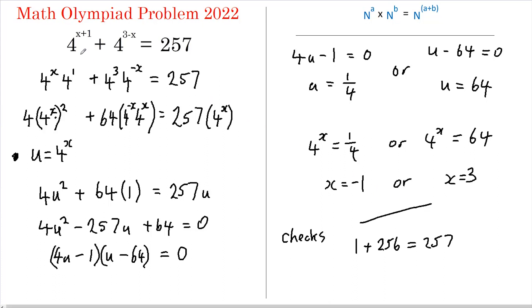And if x equals 3 we get 4 to the 4 plus 4 to the 0. So 4 to the 4 is 256, 4 to the 0 is 1. And again we get 257.